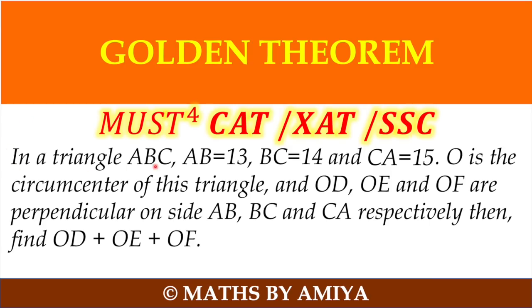Question is in front of you. In a triangle ABC, AB is 13, BC is 14, CA is 15. O is the circumcenter of this triangle, and OD, OE and OF are perpendicular on side AB, BC and CA respectively. Then find the value of OD plus OE plus OF.